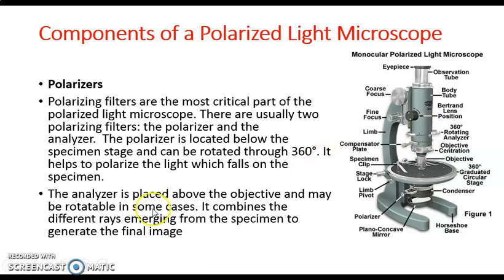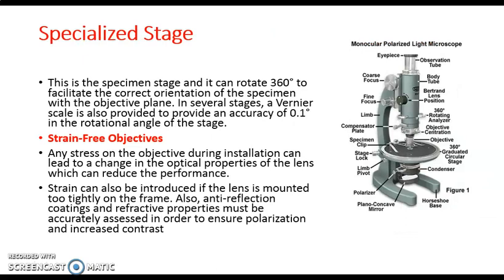The analyzer combines the different rays emerging from the specimen to generate the final image. There is also a specialized specimen stage which can rotate 360 degrees to facilitate correct orientation of the specimen with the objective plane. In several stages, a vernier scale is also provided which gives greater accuracy.